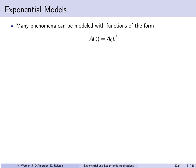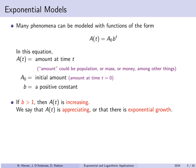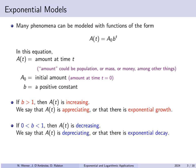Many phenomena can be modeled with functions of an exponential form: a(t) = a₀ · bᵗ. Here a(t) refers to the amount of something at time t, and a₀ is the initial amount at time t = 0. b is a positive constant — the base of the exponential function — not equal to one. If b is greater than one, the function is increasing, which we call exponential growth or appreciation. If b is between zero and one, the function is decreasing, which we call exponential decay or depreciation.